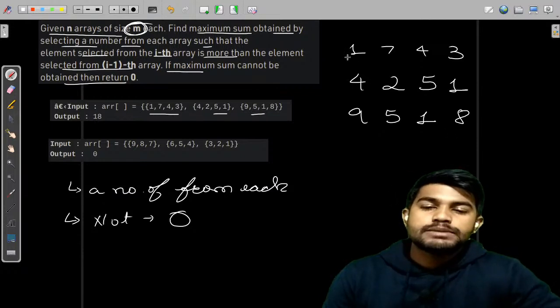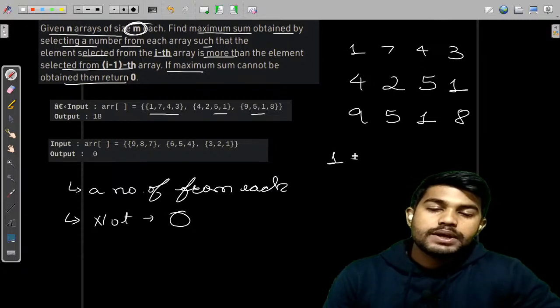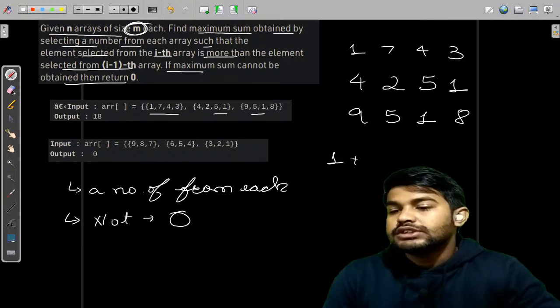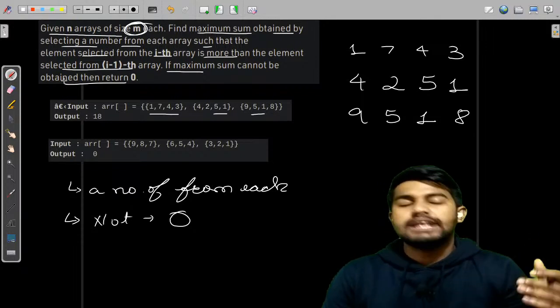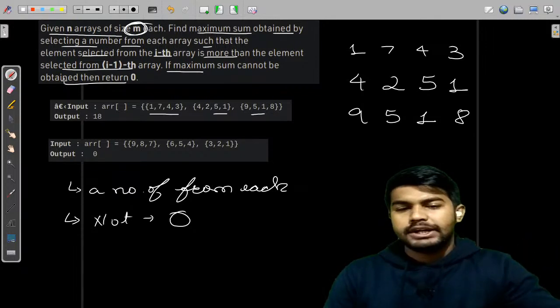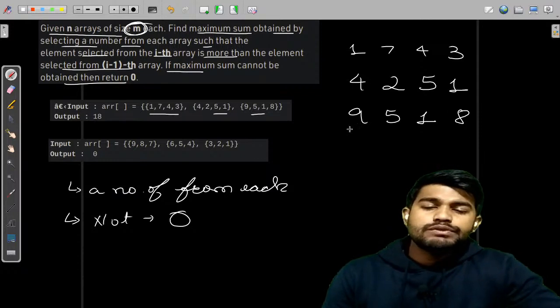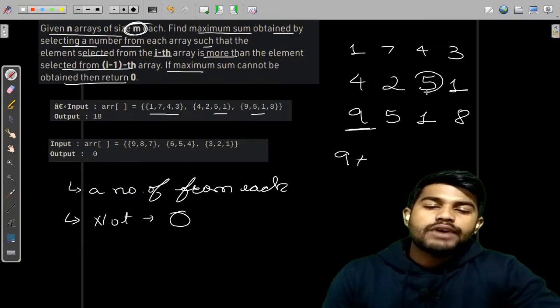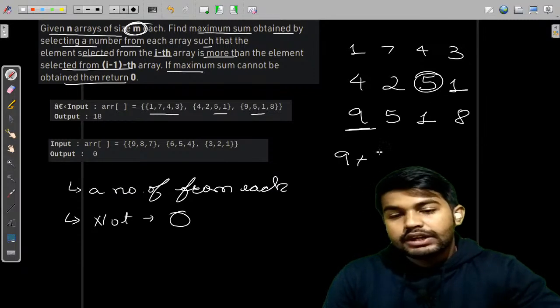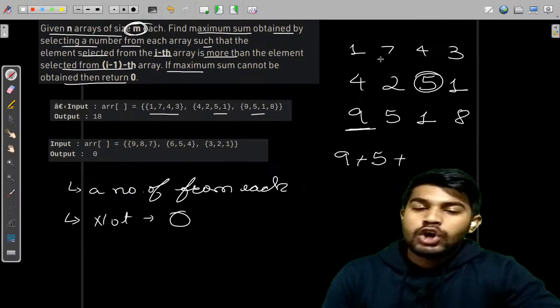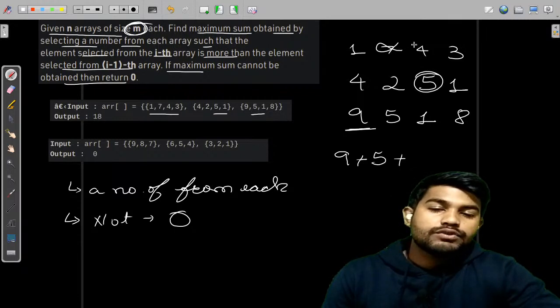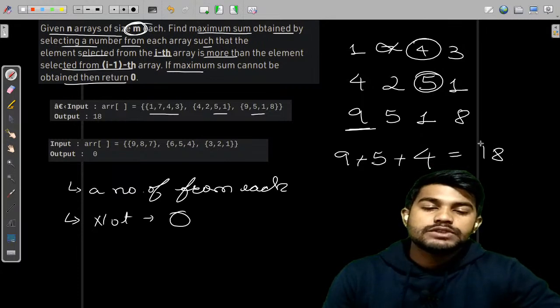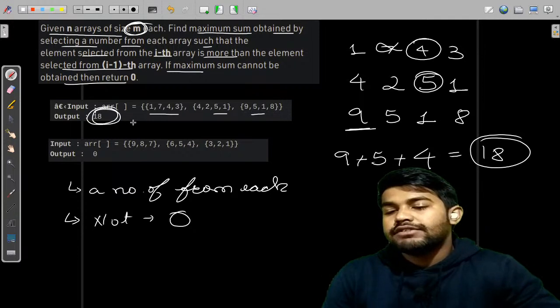So let us move forward. Suppose we pick up this 1, we cannot pick up 1 from the next array. We can pick up 2, 5 and 4. Let us move from the backward itself, because if we take the last number we would get fairly a rough idea. So we would take 9 from it, the largest number. Then we would take 5 from the next array, and then we cannot take 7, we can take 4. So 9 plus 5 plus 4 equals 18.